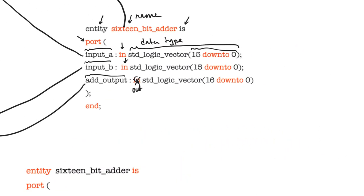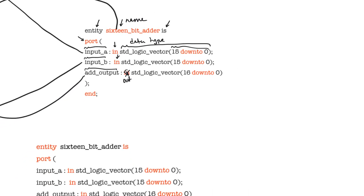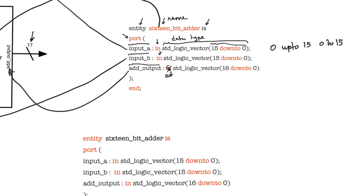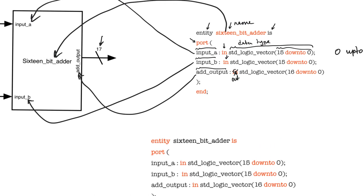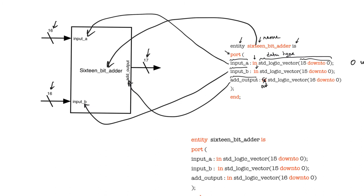The indices run from 15 down to 0, which indicates that the length of the vector is 16 bits. It is sometimes possible also to use 'up to' or 'to' to describe the indices of a bus or vector — so we could say '0 up to 15' or '0 to 15'. But it is more common to state buses using the 'down to' keyword. The entity defines the names of the ports, their directions, as well as their sizes.